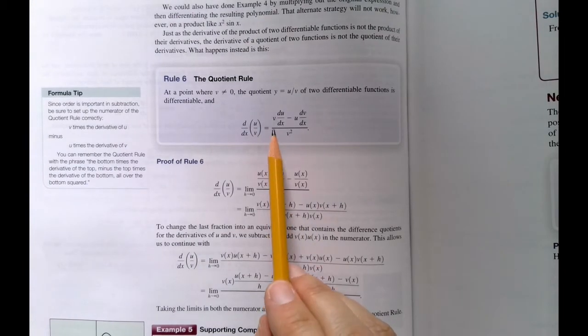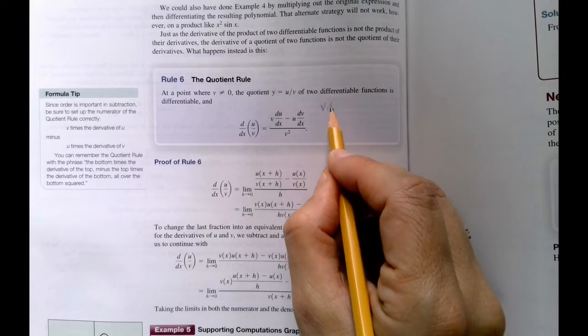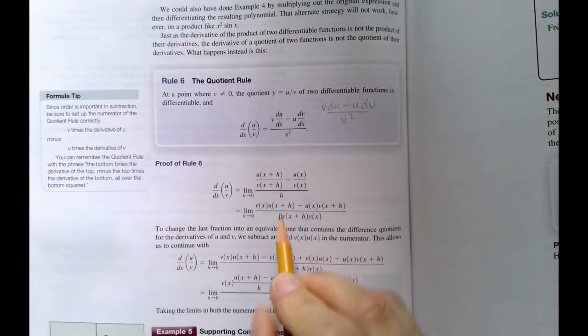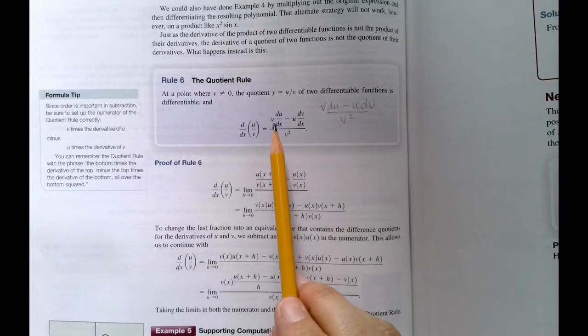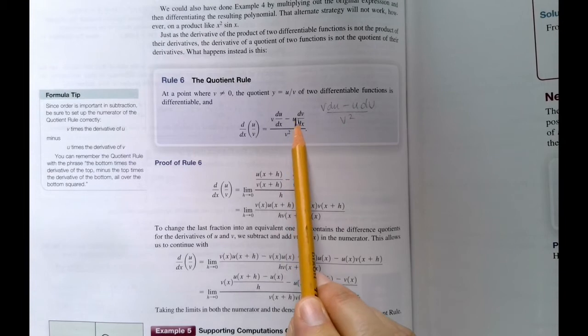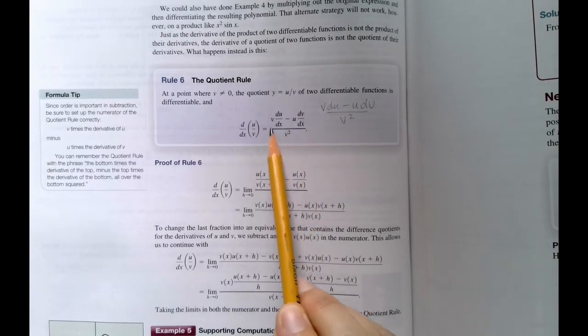So the way I remember this is v du minus u dv over v squared. Or you can think of it as the bottom times the derivative of the top minus the top times the derivative of the bottom over the bottom squared.